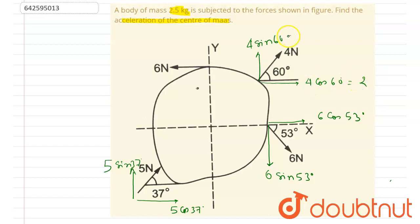So 4 cos 60 is 2, 4 sin 60 degrees is 2 root 3, and 6 cos 53 degrees, so we know that cos 53 degrees is 3 by 5, right? So it will be 18 by 5, and it will be sin 53 degrees, 4 by 5, so it will be 24 by 5.